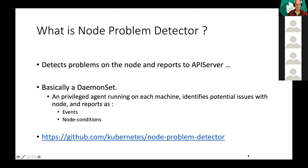What NPD does is very simple — as the name suggests, it just detects problems and reports them to the API server. It's basically a DaemonSet, so you see a privileged agent running on each machine with some sort of log parser. It checks for problems with the machine and reports to the API server in two main ways: one is via Kubernetes standard events, and the other is via node conditions. This is a Kubernetes community supported project.